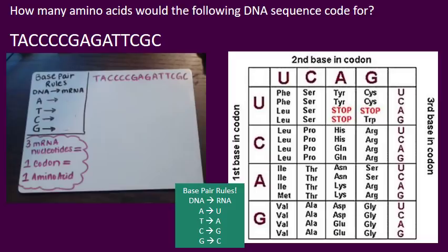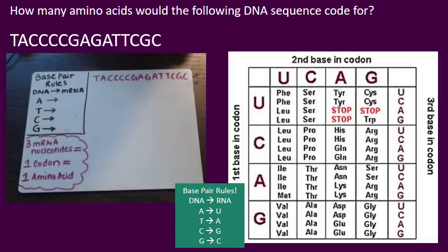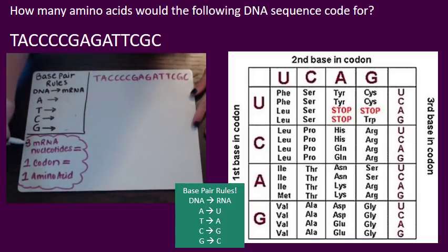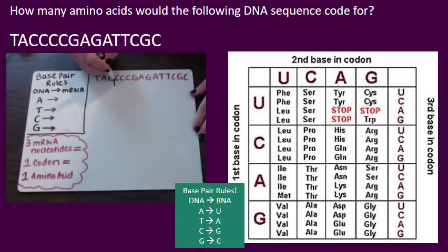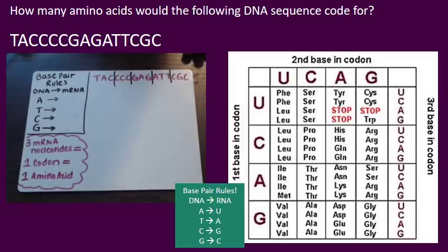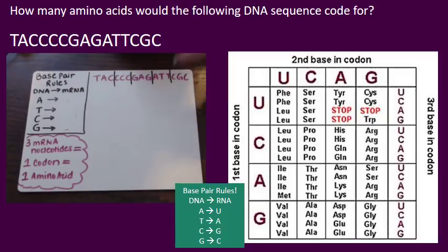For our final question: how many amino acids would the following DNA sequence code for? I've given you a pretty long sequence. Three messenger RNA nucleotides is one codon, which is one amino acid. Our first step is to divide this into codons — if you count them, that would be one, two, three, four, five. You might think the answer is five, but we need to do transcription and translation to double-check, and I'll explain why as we go.